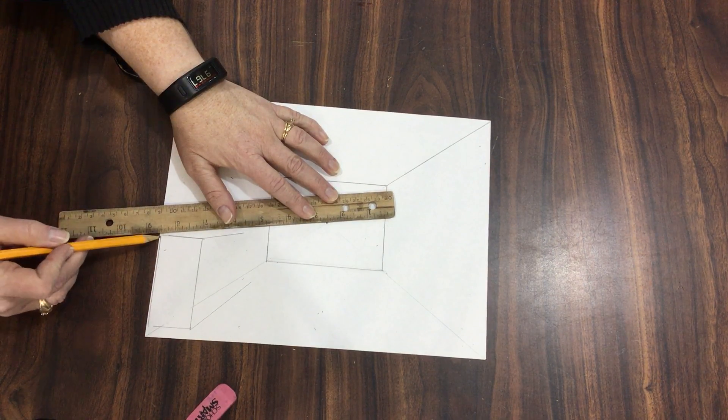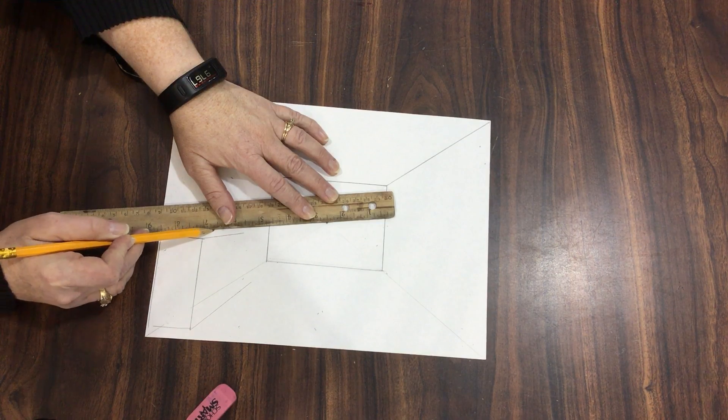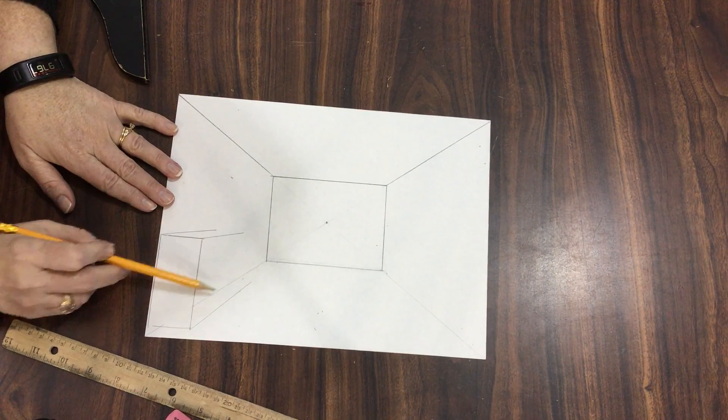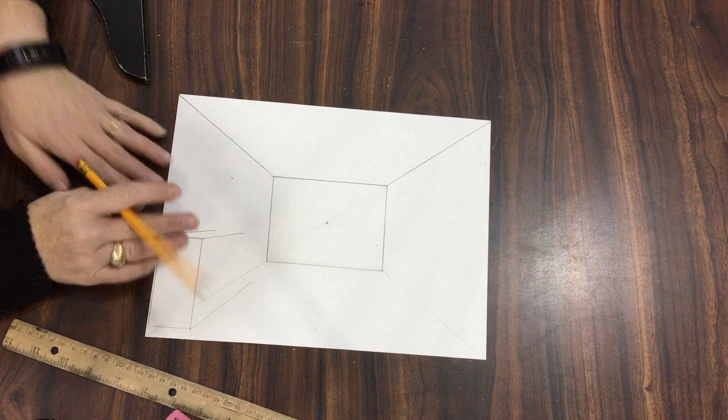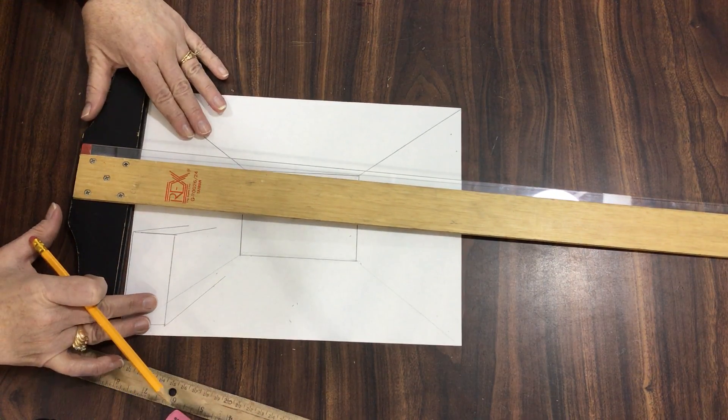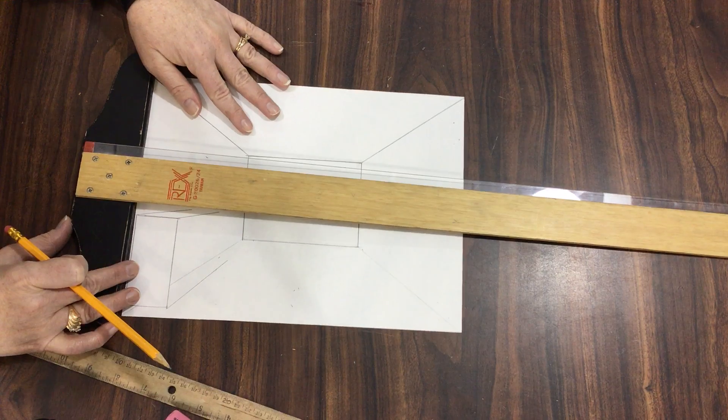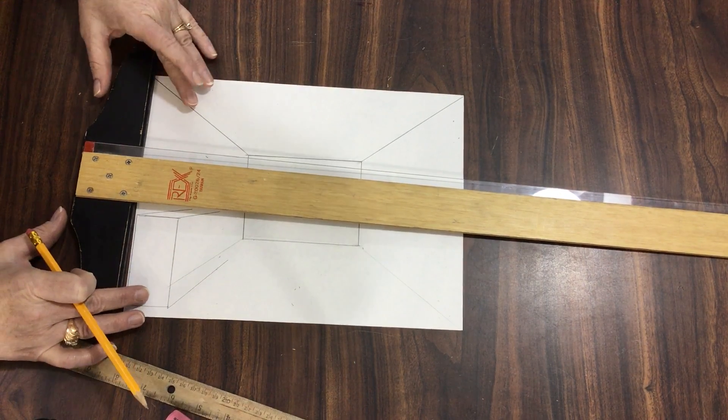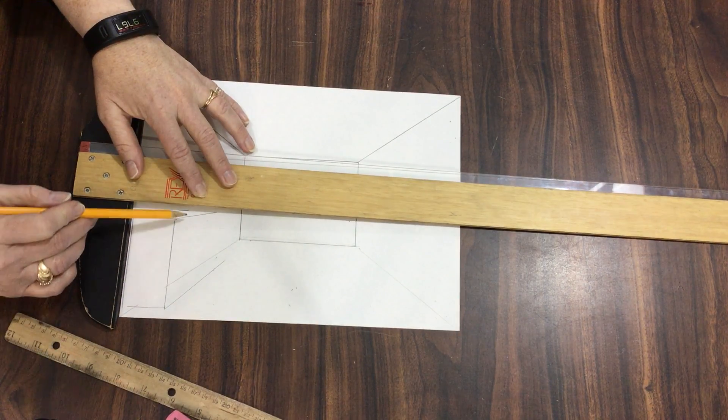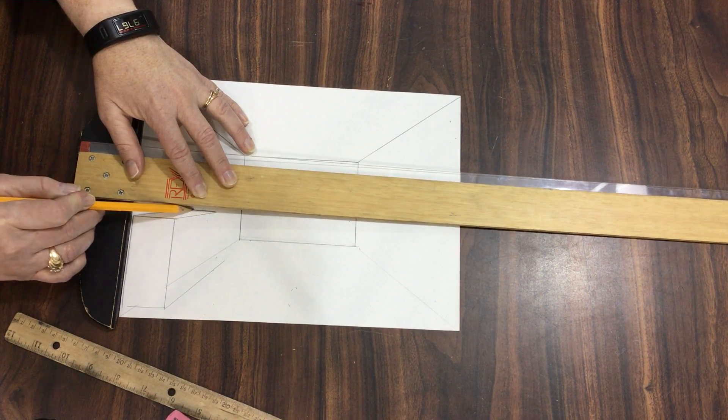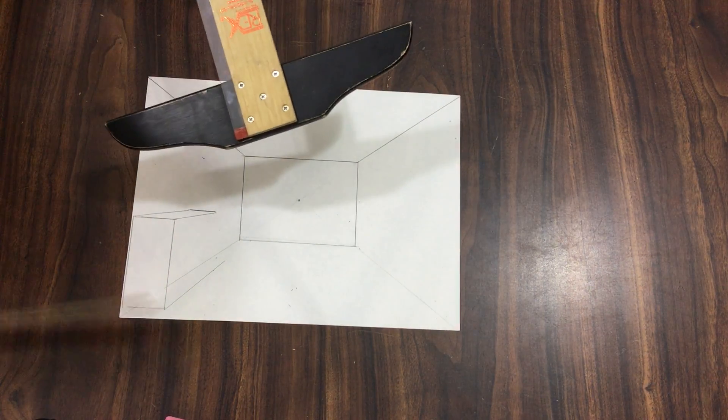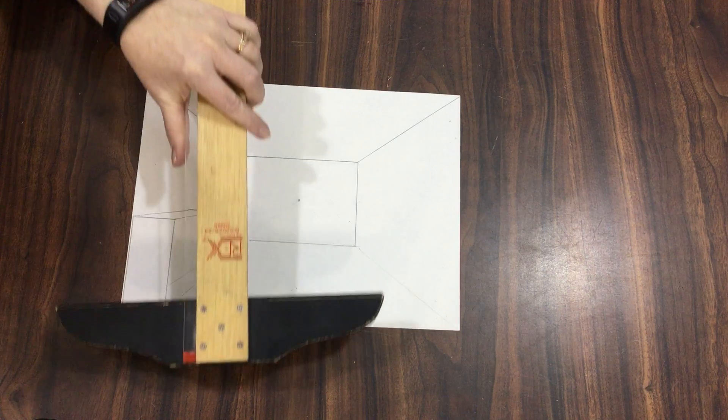Now I'm making my rectangle into a three-dimensional figure. I've got these lines lined up to the vanishing point. I'm going to take a T-square and I'm going to end my shape to make it look more like a cube.